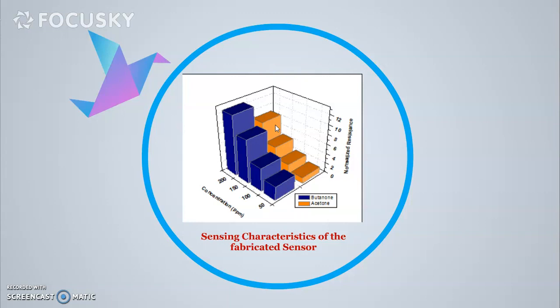With respect to that exposure, the normalized changes in resistance were recorded and put here. Through this calibration graph, we can see that in case of both the analytes, electron donation has been observed from the analyte to the sensor.